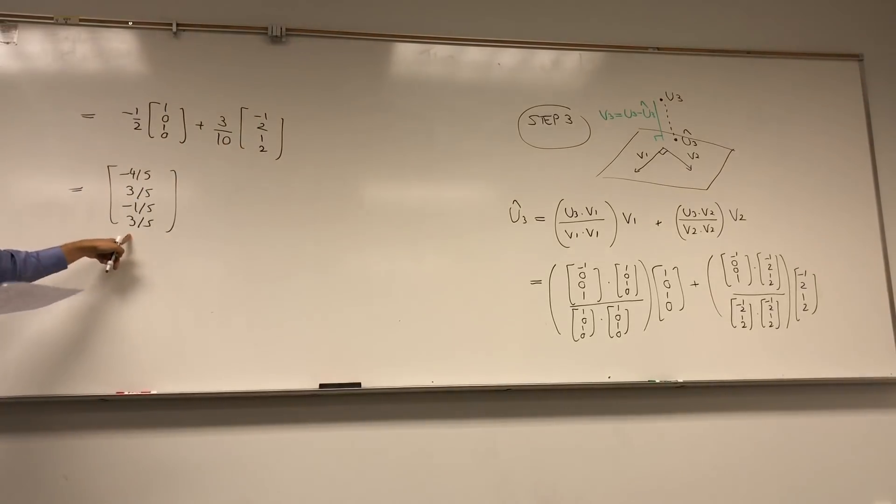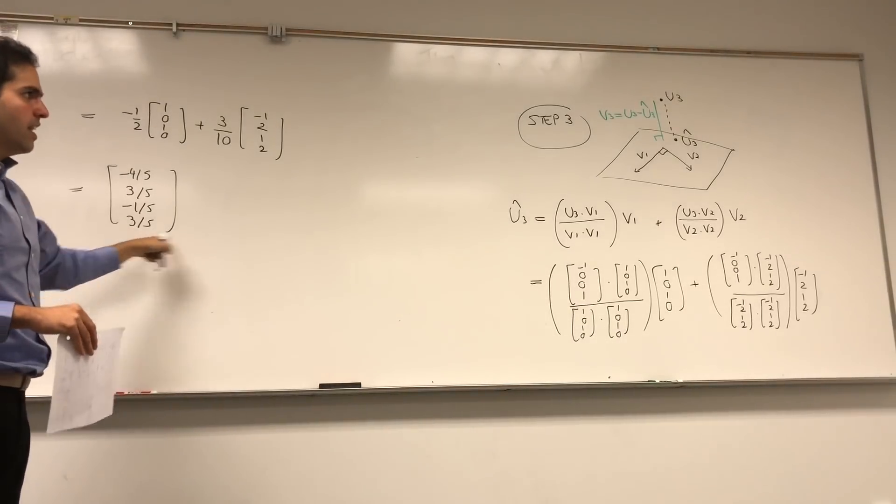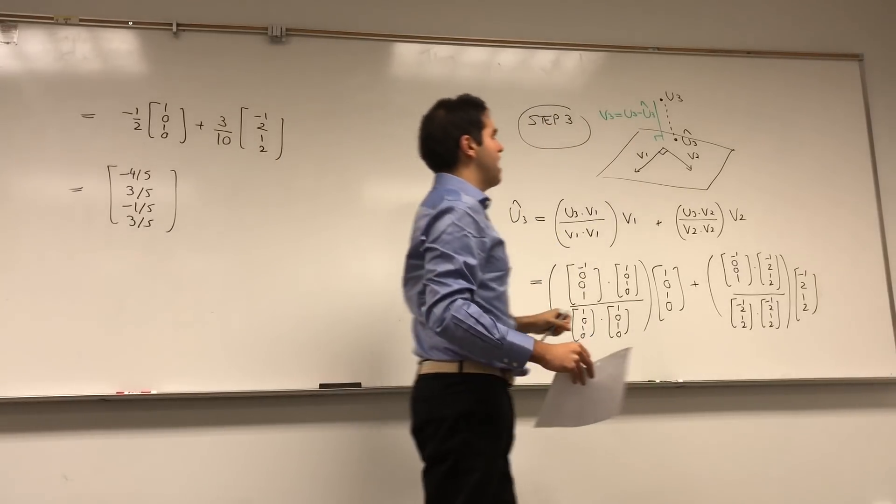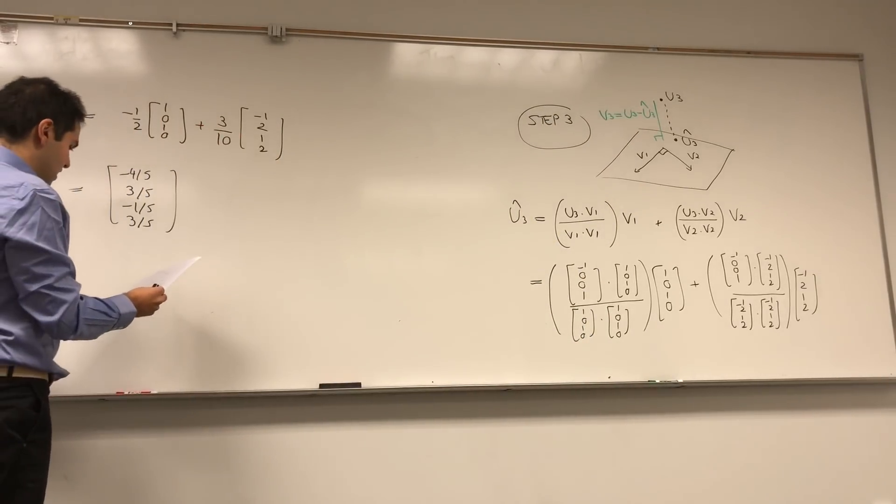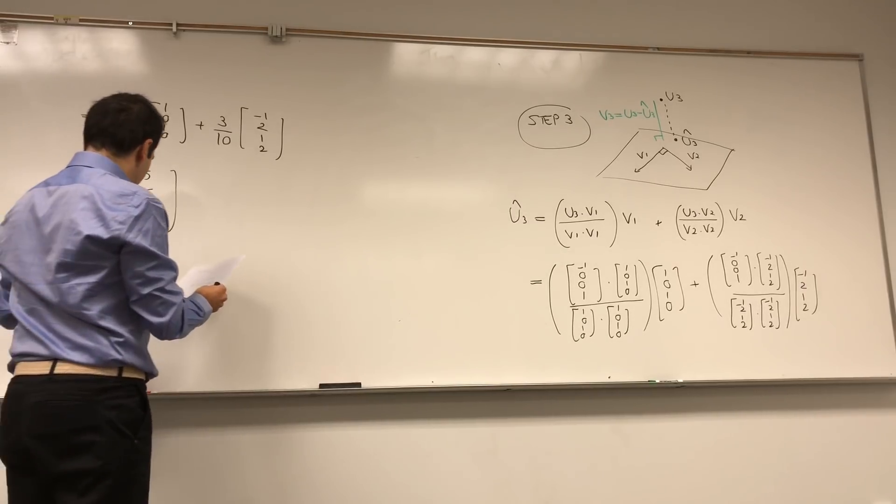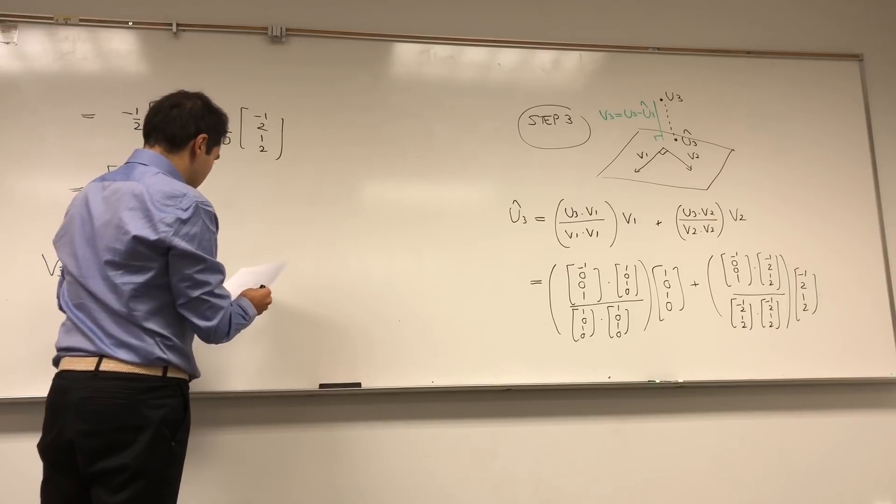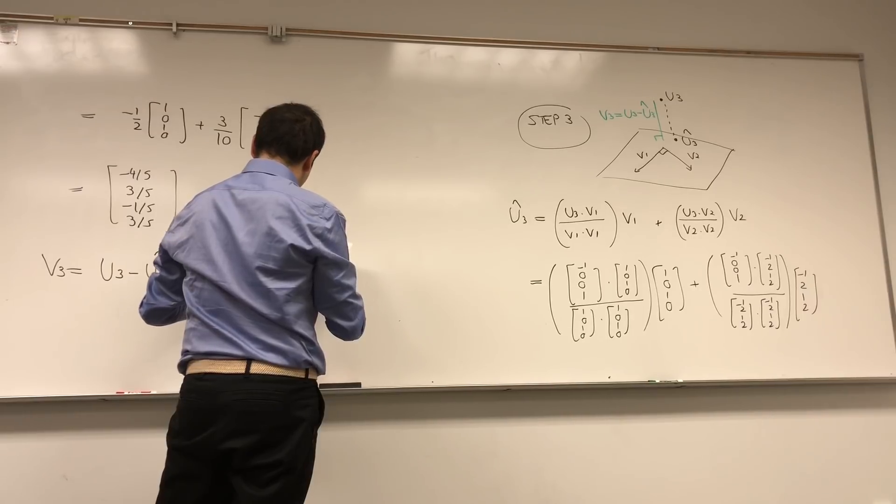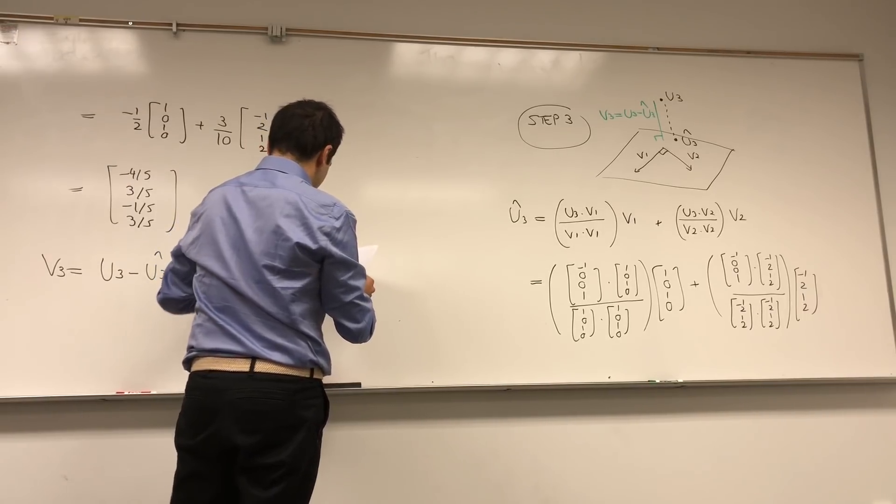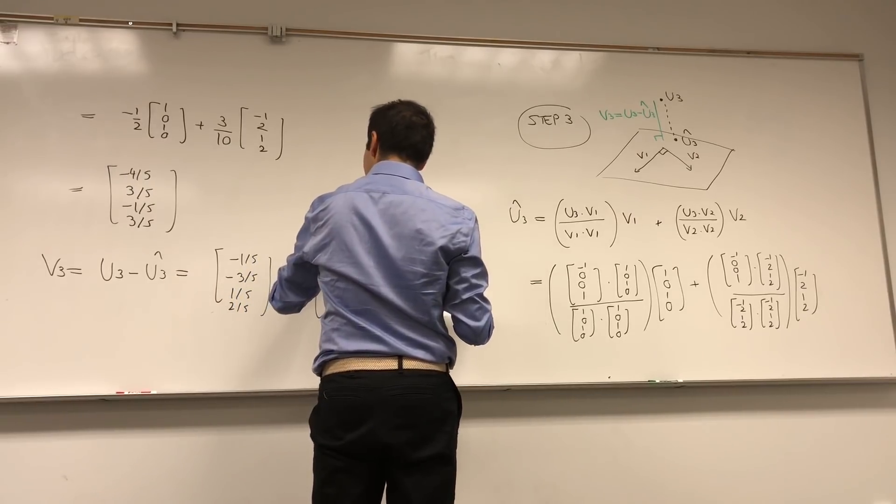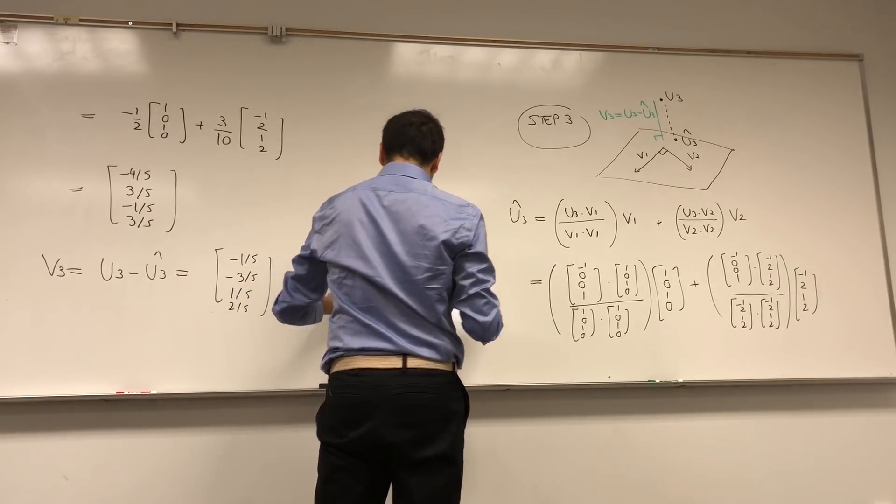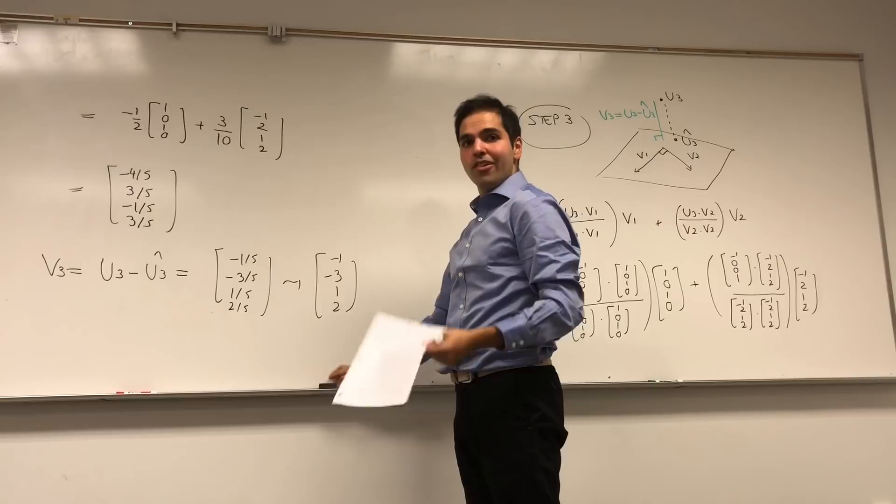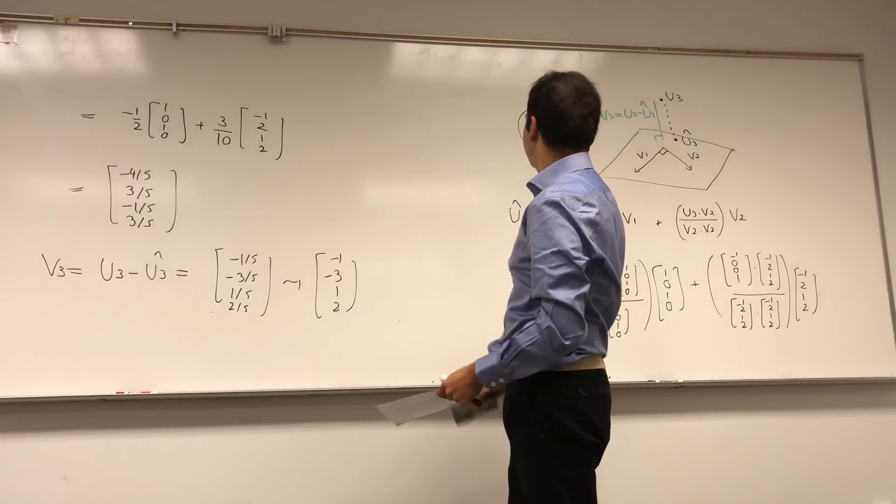Again, at this point, do not rescale your vector, because it would change the position of your vector. But once we found U3 hat, remember the answer is just U3 minus U3 hat. So we get V3 is U3 minus U3 hat. You can calculate this to be minus 1 fifths, minus 3 fifths, 1 fifths, and 2 fifths. And if you like, rescale it to minus 1, minus 3, 1, 2. And therefore, we did find our orthogonal basis. Namely, it's the following: this set V1, V2, V3, which is 1, 0, 1, 0; minus 1, 2, 1, 2; and minus 1, minus 3, 1, 2 is an orthogonal basis.